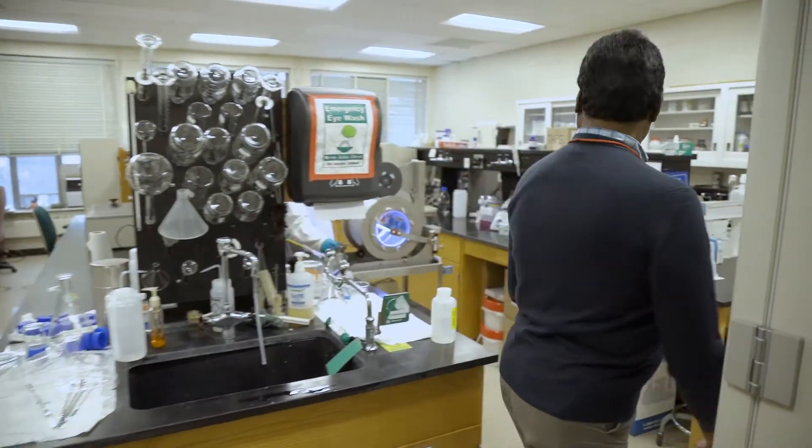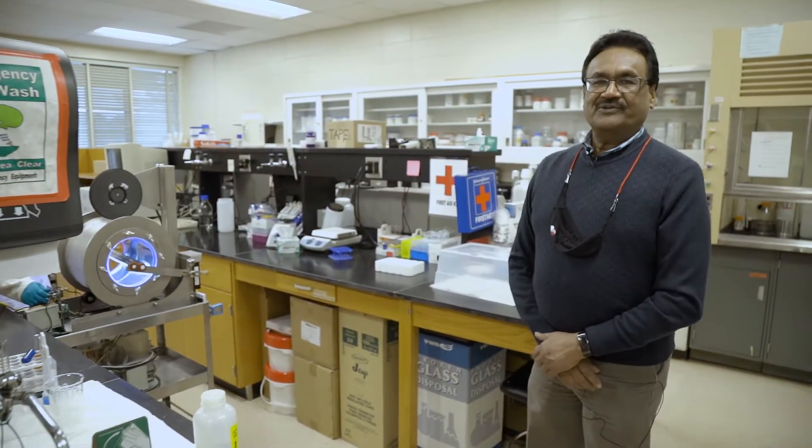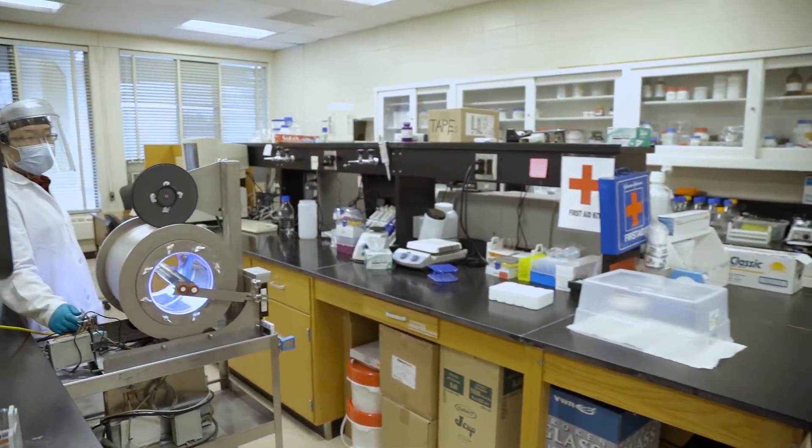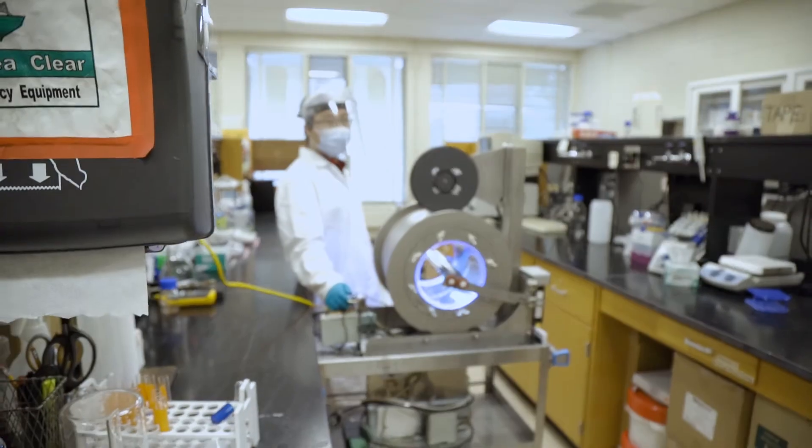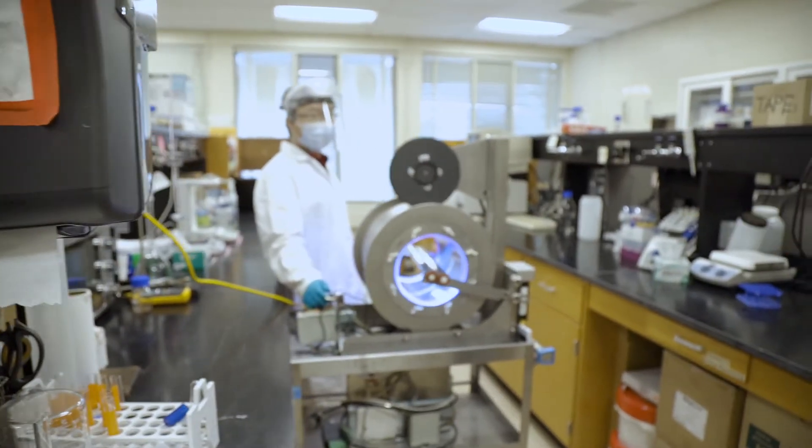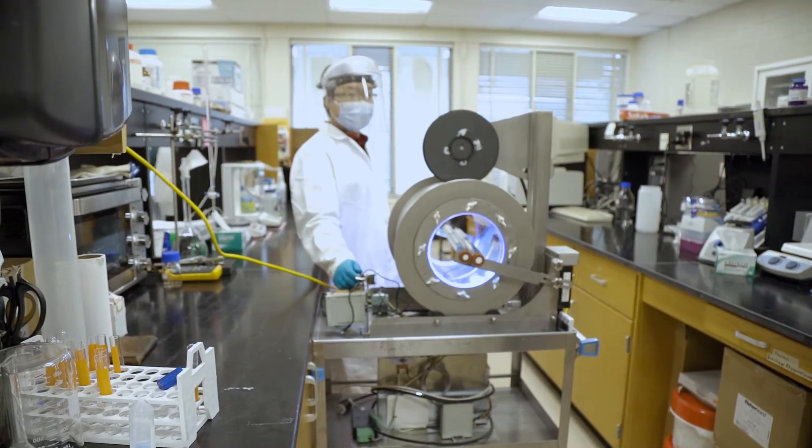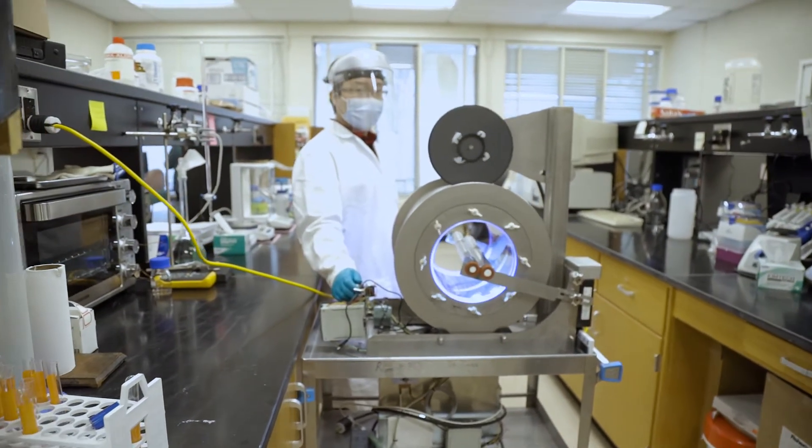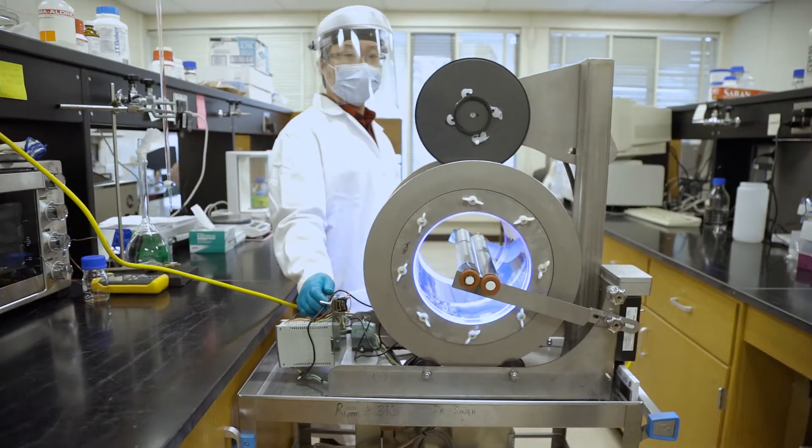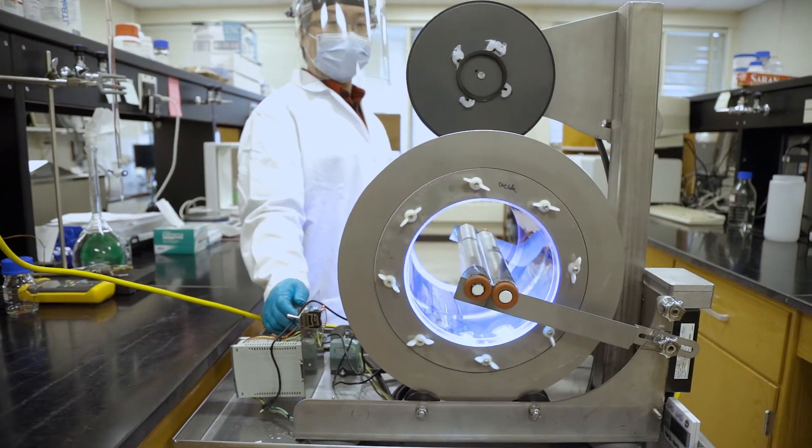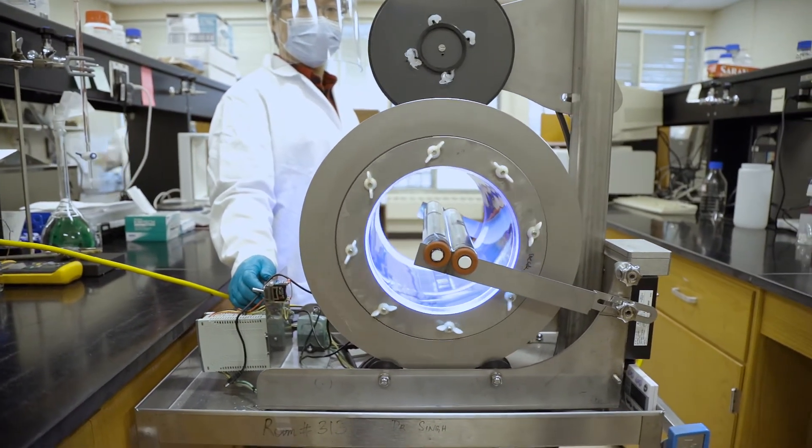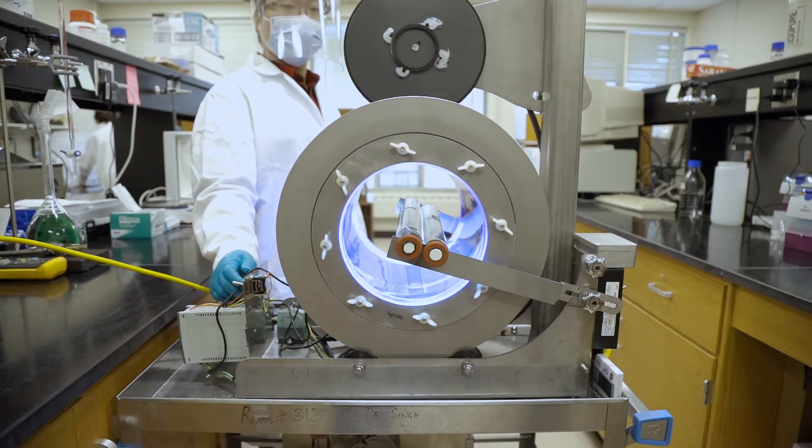The first one is a unit we made for ultraviolet light treatment of peanut samples. We have the ultraviolet light in the middle of the drum and peanuts around it, so it can rotate. That way it will expose all the surfaces and the ultraviolet light is able to disinfect those samples from aflatoxin.